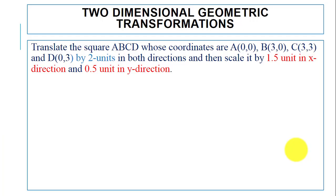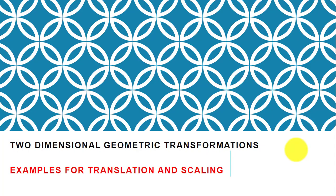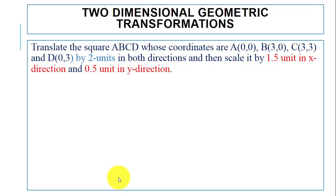In the previous video we covered different types of transformations like scaling, rotation, reflection, shearing, and translation. In this video we are going to learn translation and scaling by example — how translation and scaling work, how we can perform translation on coordinates, and how we can change the position of coordinates. As you can see on the screen, we have an example for translation and scaling.